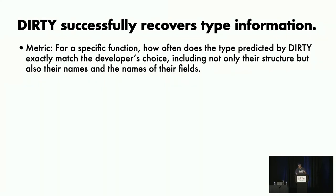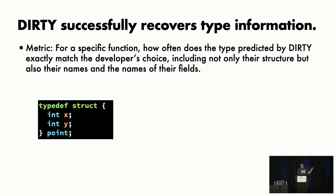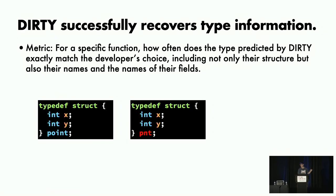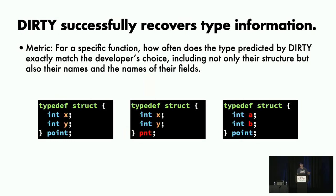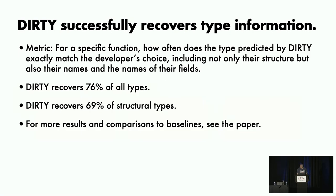Here's our metric. Our success metric is for each function, how often does DIRTY's choice of variable type exactly match the developer's choice, including not only structure, but also the names of the type and the names of the fields. For example, this type here is considered different from this type here because the names are different, and it's also considered different from this type here because the fields are different. We need all of these to be exactly the same. We found that DIRTY was able to recover 76% of all types. Just because scalar types dominate, we also separated out just the structural types and found that it was able to recover 69% of structural types. For more details and comparisons to baselines, you can see our paper.